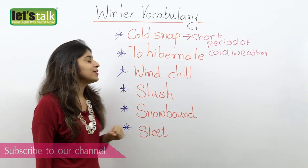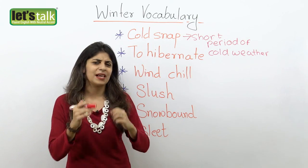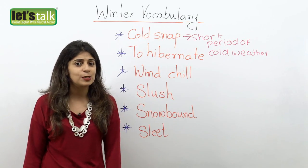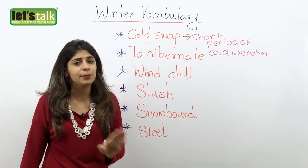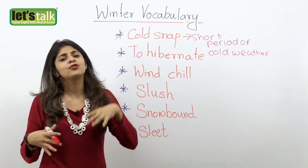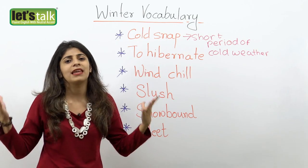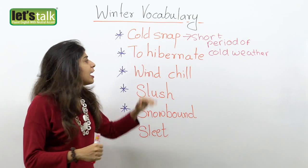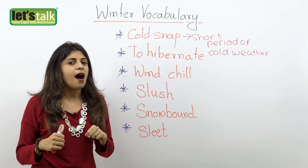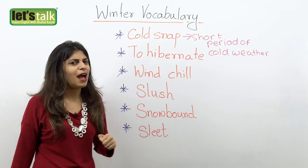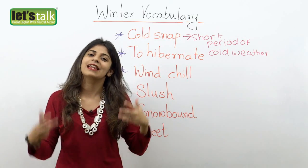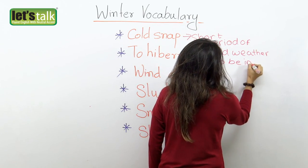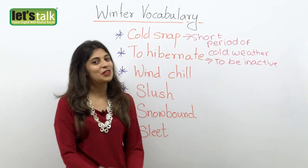The next word is to hibernate. To hibernate is basically used for animals who get really inactive during the winter season. But we do use this word when we like to say, oh I love to hibernate during the winter. So basically you love to sleep through the winter season or you love to be inactive throughout the season because it's so cold outside that you really don't want to step out. For example: I don't see my neighbors during winters — I guess they love to hibernate. So to hibernate is to be inactive during the winter season.